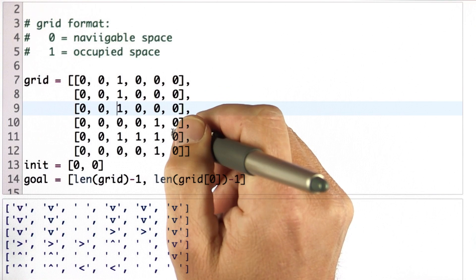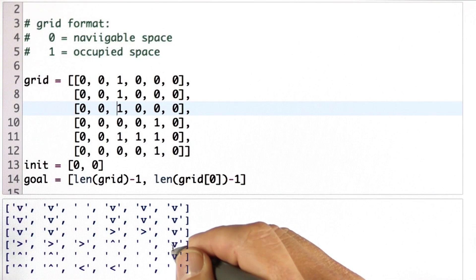Obviously, to get to the goal over here, you want to go down, as indicated by these Vs over here, down, down, down, down, down.